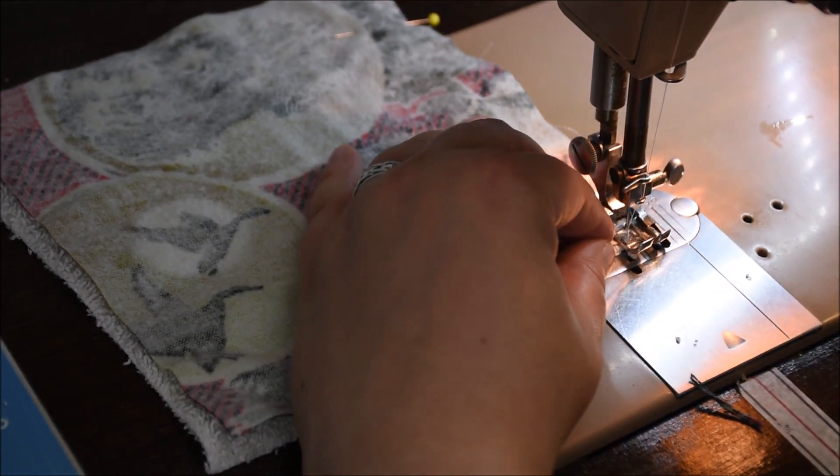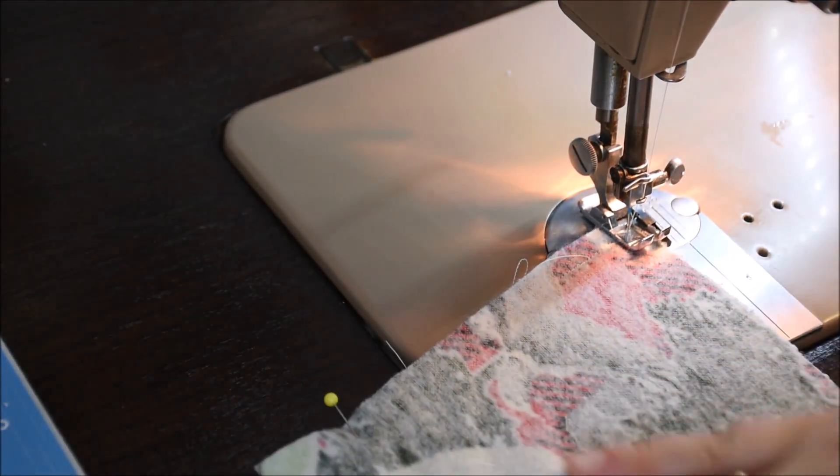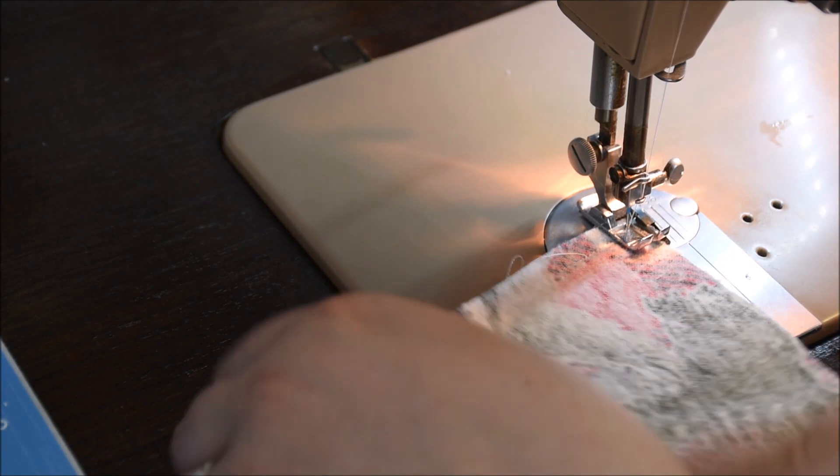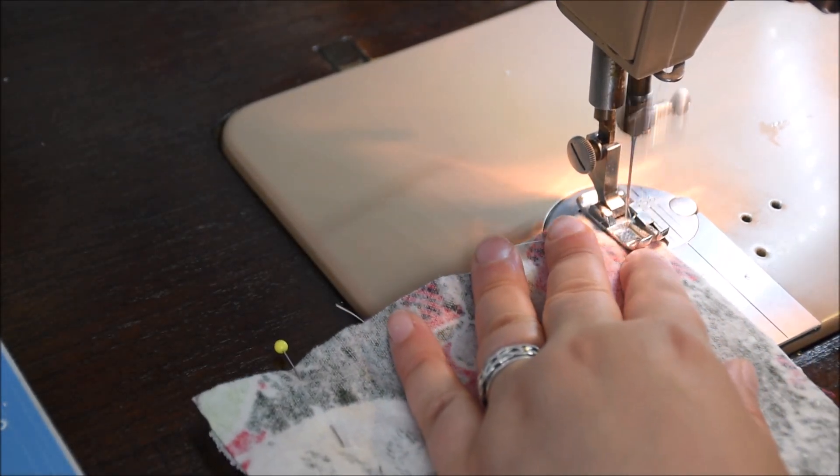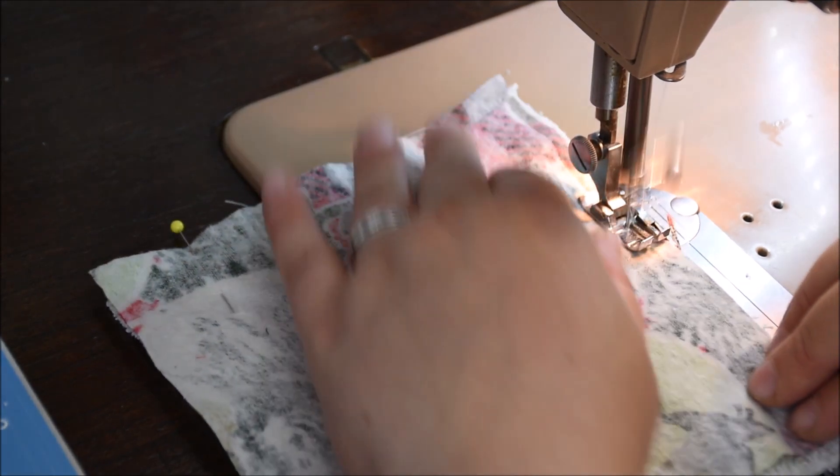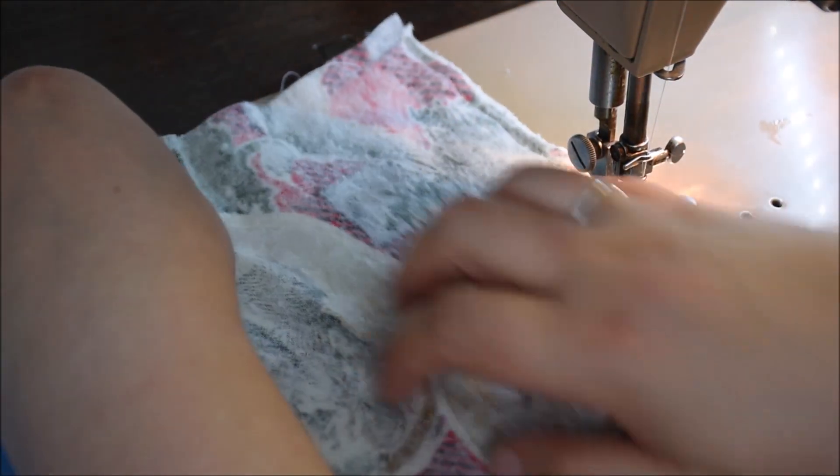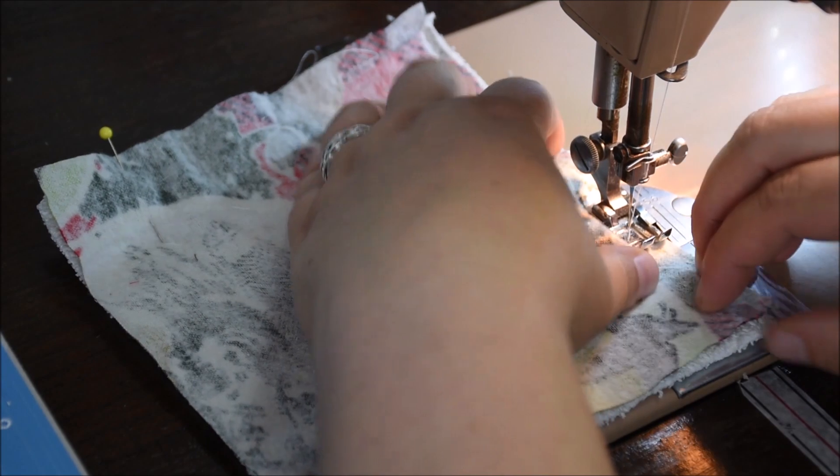When I get to the corner I'm going to put the needle down, lift the presser foot, turn the work, put the presser foot back down. And here you can see I'm trying to align everything again just to make sure it's not shifting too much, and then carry on sewing. You want to do that all the way around the piece of work until you get to the remaining pin.